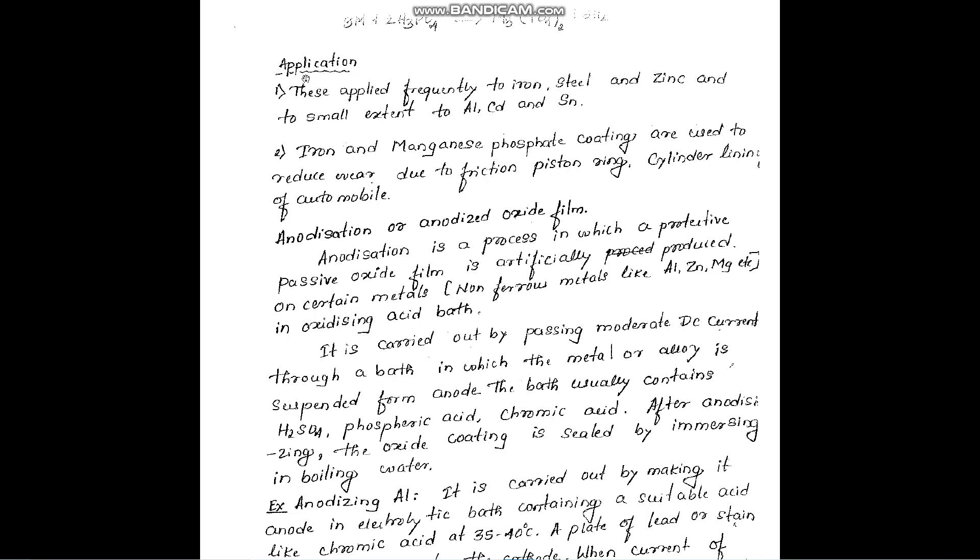The applications of phosphate coatings are: they are applied frequently to iron, steel and zinc, and to a small extent to aluminum, cadmium and tin. Iron and manganese phosphate coatings are used to reduce wear due to friction in piston rings, cylinder linings and other automobile parts.